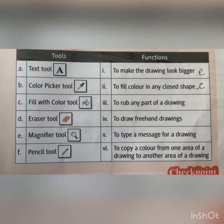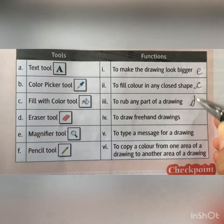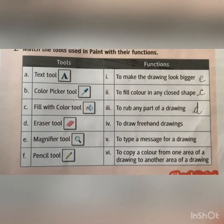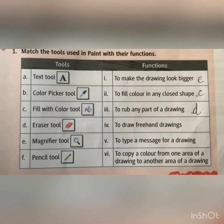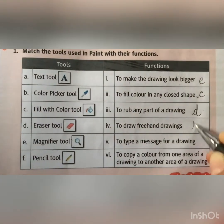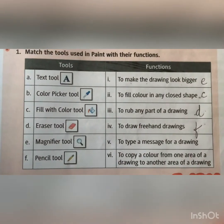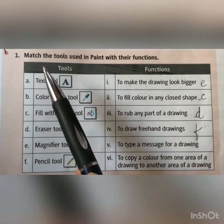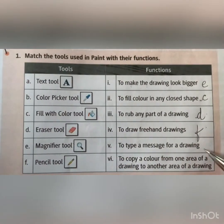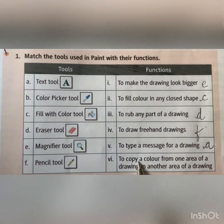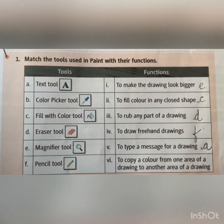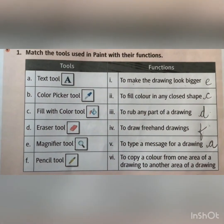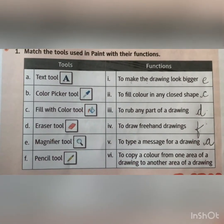To erase part of a drawing, we use the eraser tool. To do freehand drawing without any shape, the pencil tool is used. To type a message for a drawing, we can use the text tool — answer A. To copy a color from one area of a drawing to another area, we use the color picker tool.